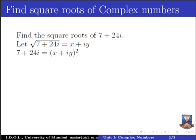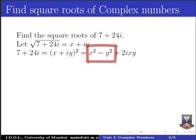Squaring the right hand side by the formula of a plus b whole square — that is a square plus b square plus 2 times ab — we get x square minus y square plus 2xyi. Remember the b part is iy, so iy whole square is i square y square, and since i square equals minus 1, we have x square minus y square plus 2xyi.